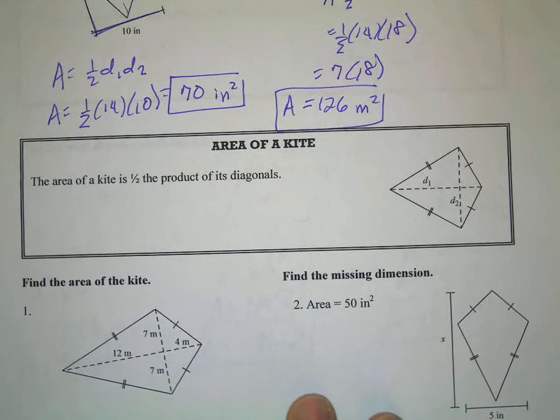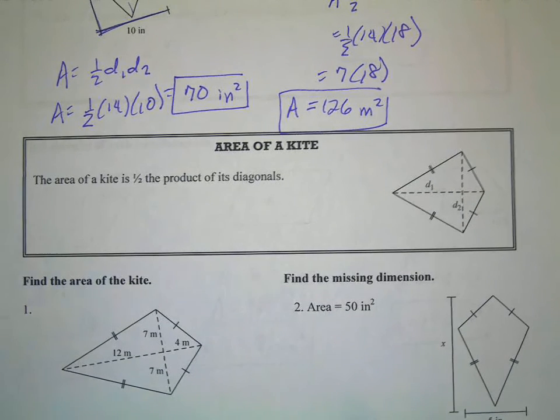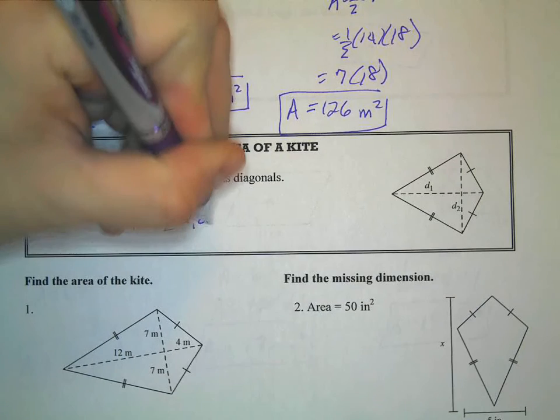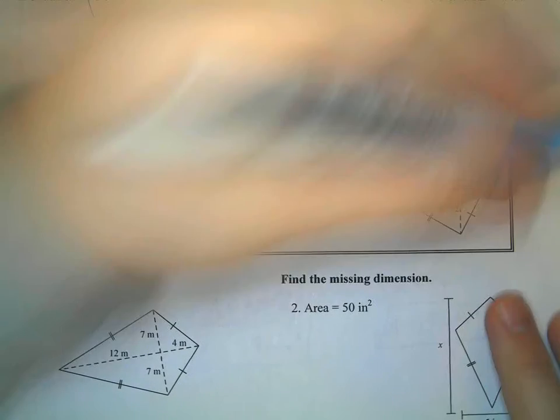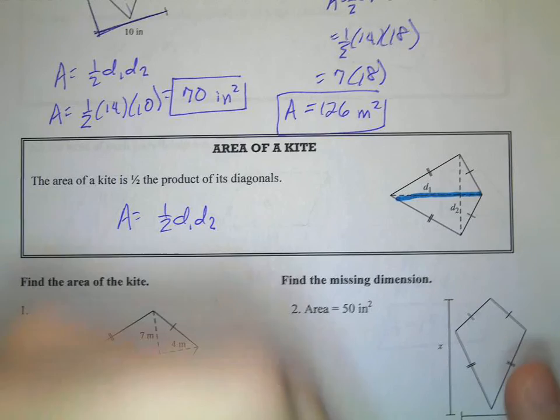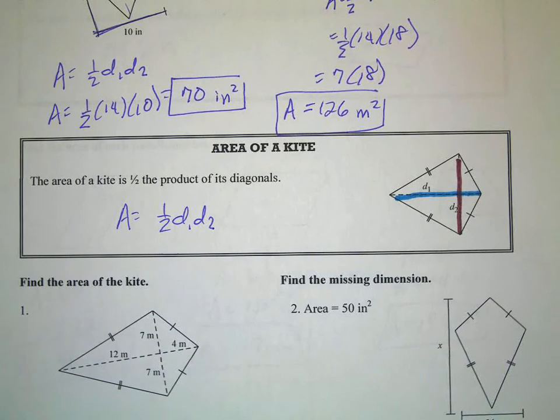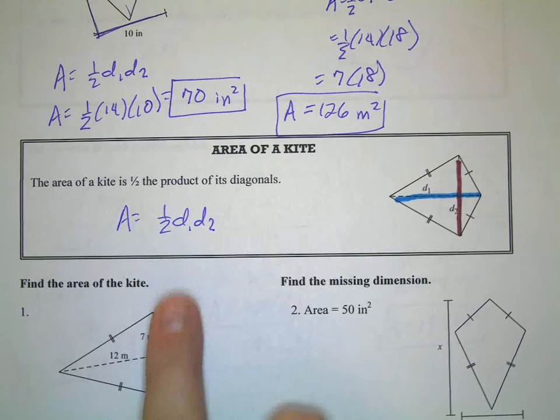Okay. And the area of a kite is the same formula. 1/2 times the product of the diagonals. So it's a little bit weird because normally rhombuses or rhombi and kites don't have anything in common, but they do have the same formula for area. 1/2 times the length of the diagonals.